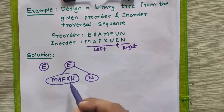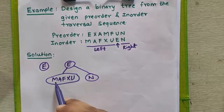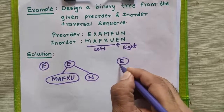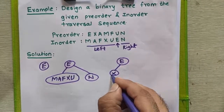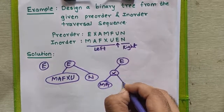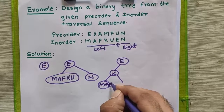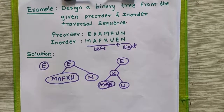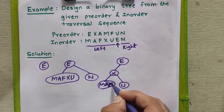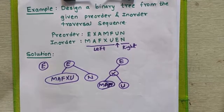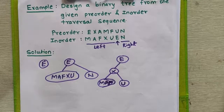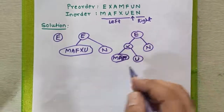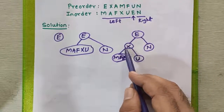Now check it in the diagram. If we make node X the root node, then M, A, and F will go to the left side, whereas node U will go to the right side. In this diagram, M, A, F are in the left subtree, U is in the right subtree, and N is placed here. We have now successfully placed node X.